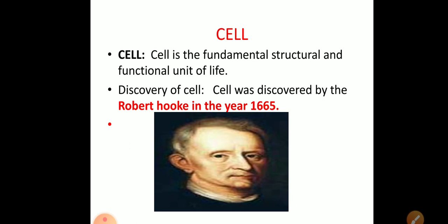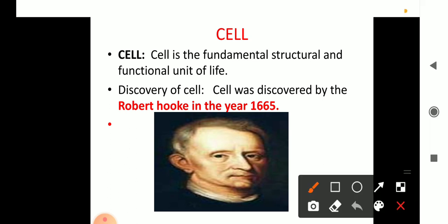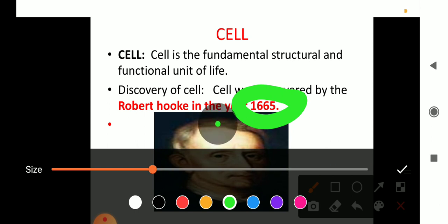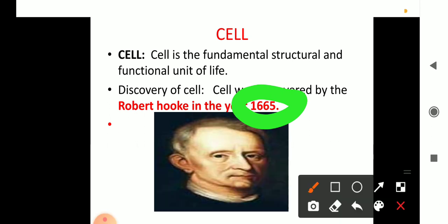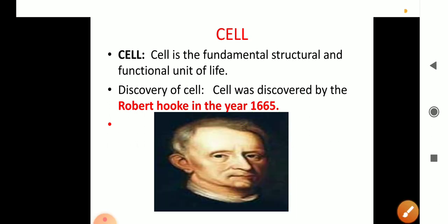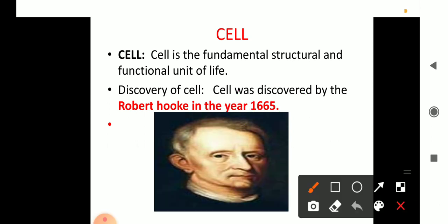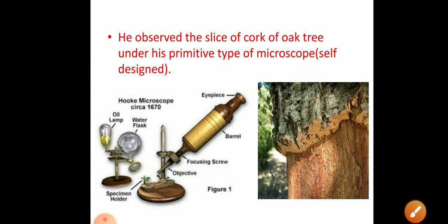The discovery of the cell was first done by Robert Hooke in 1665. Now let's see how he discovered the cell — he observed a slice of the cork of an oak tree.